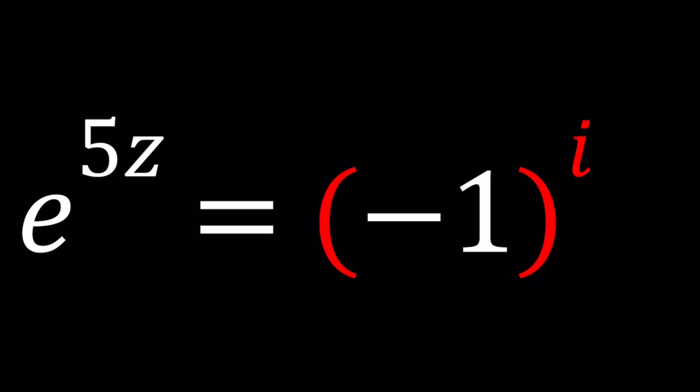And also, if you're new to complex numbers, or you need a refresher, go ahead and check out my lecture videos and pretty much all the videos in these series. So we have this equation e to the power 5z is equal to negative 1 to the power i. How do we solve for z?